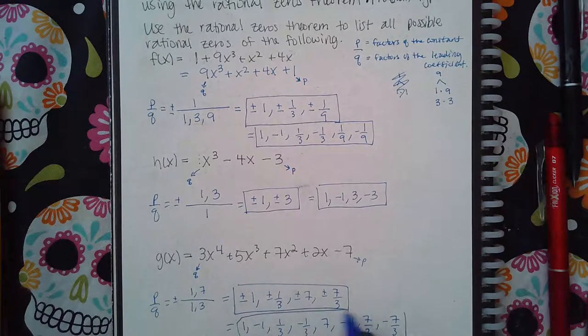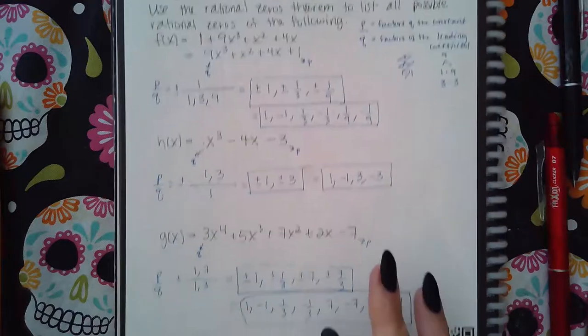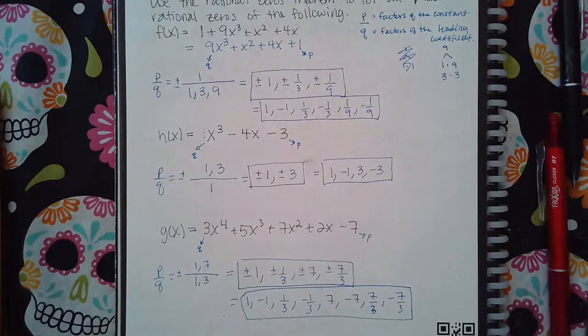So you could also write in this. And that's it. So that is how you do the rational zeros theorem.